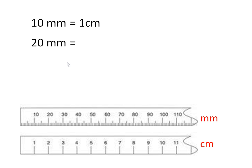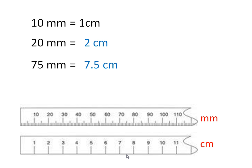Twenty millimetres is equal to two centimetres. Seventy-five millimetres is equal to seven point five centimetres. To change millimetres to centimetres, divide by ten.